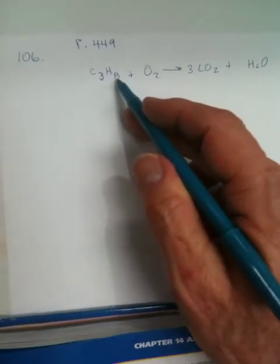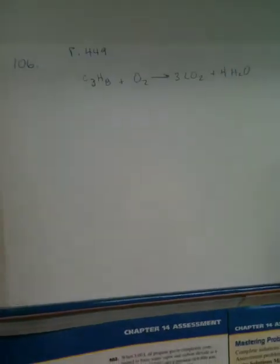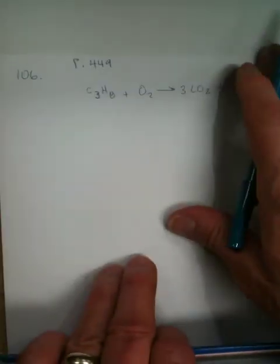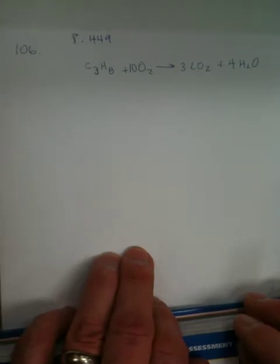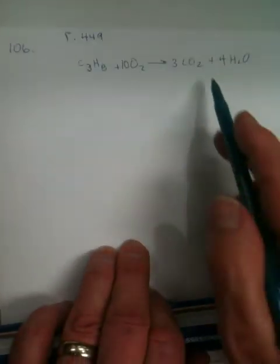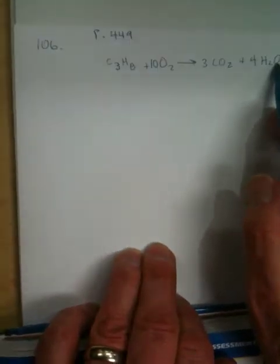Now, to get this guy balanced, we're going to have to have, let's see, hydrogens here is 8, so we're going to need a 4 here, and that gives me an even number of oxygens. And once I have my even numbers of oxygens, I can have 6 plus 4 is 10, and now I have a balanced equation. Yeah, it's 10. Because we have 6 oxygens here and 4 here. Do you see why?